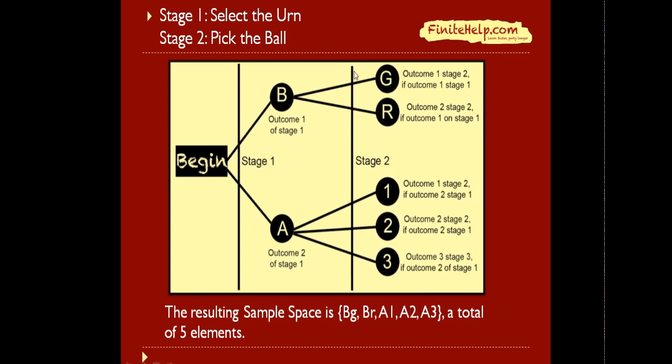From this tree diagram you're going to be able to figure out the sample space, which contains five elements for our example: urn B green ball, urn B red ball, urn A ball 1, urn A ball 2, and urn A ball 3. So here you have B green, B red, A1, A2, and A3 for a total of five elements in the sample space.